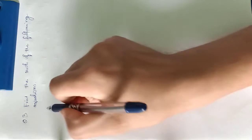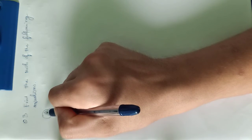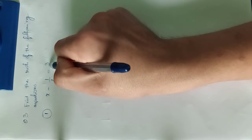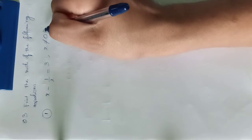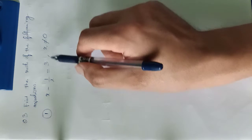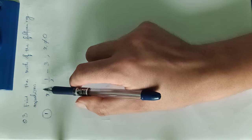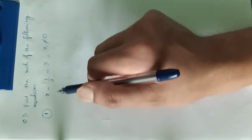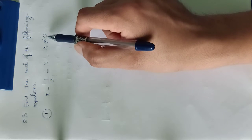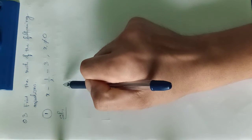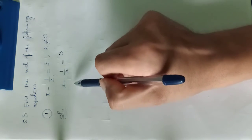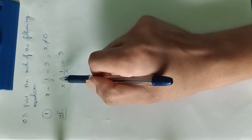The first question in question number 3: the given expression is x − 1/x = 3, with the condition that x ≠ 0. Why x ≠ 0? Because when you substitute x = 0, the given equation becomes undefined — it will no longer be a quadratic equation. So the condition is x should not be 0.